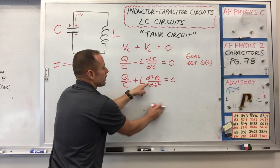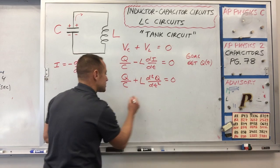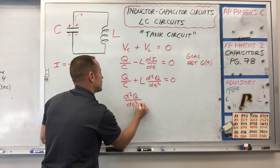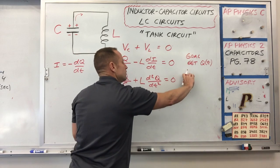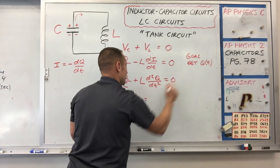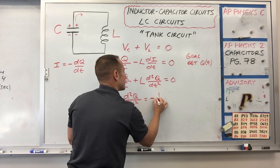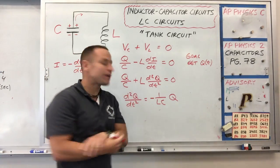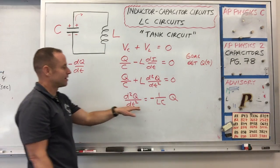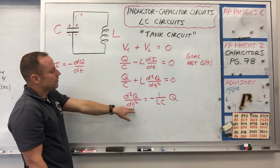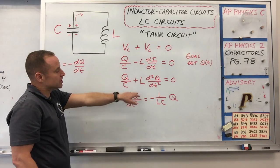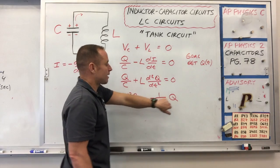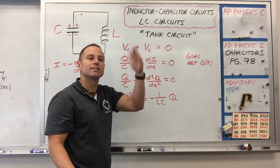We now have a differential equation for Q. Solving for the second derivative of Q, we get d²Q/dt² equals minus 1 over LC times Q. This is saying there's an equation where if you take two derivatives of the expression, you get it back with a negative constant in front. You may recognize this as oscillations — sines and cosines.